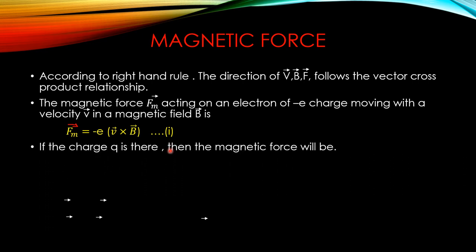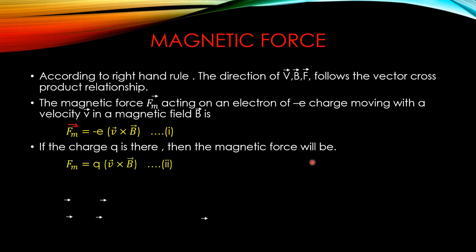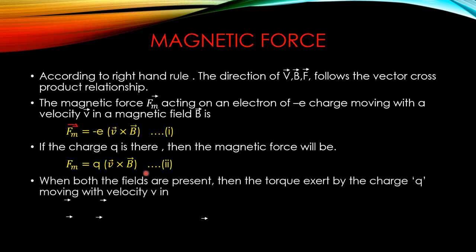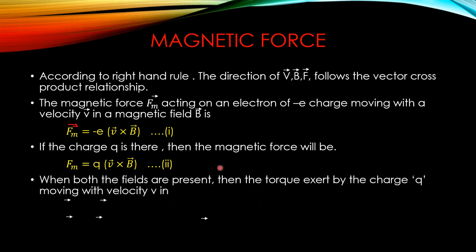If the charge Q is there, then the magnetic force will be: when it was one charge, it was minus e (because it was a negative value) into V cross B. Now talking about number of charges Q, so FM = Q(V × B) - this is equation number 2. You can put the vector arrow here; there is no problem.